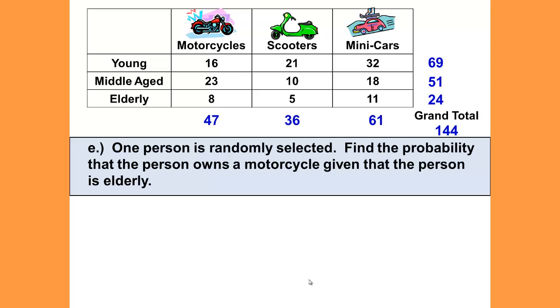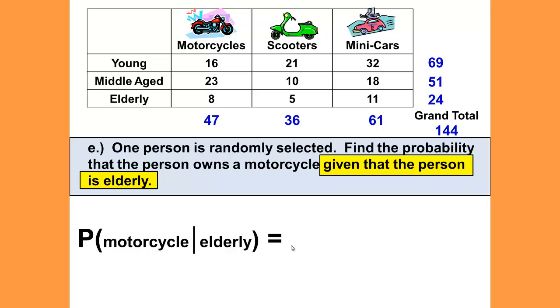Okay, let's do question E. One person is randomly selected. Find the probability that the person owns a motorcycle given that the person is elderly. The key phrase in this problem is the phrase given that. When you see the phrase given that, we know something has already occurred. We already know that the person in this case is elderly.